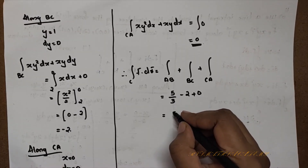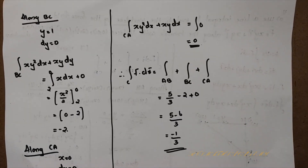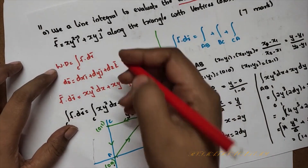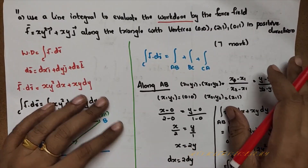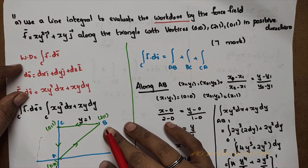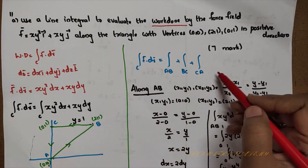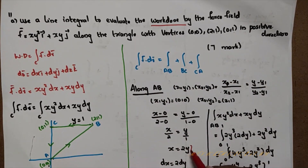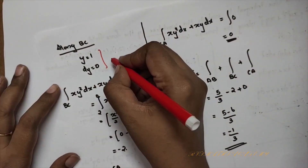The total work done is: integral over AB + integral over BC + integral over CA = 5/3 + (−2) + 0 = 5/3 − 2 = (5 − 6)/3 = −1/3. So the answer is −1/3.